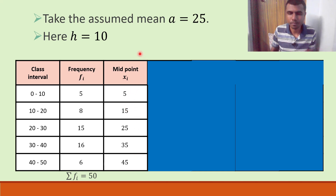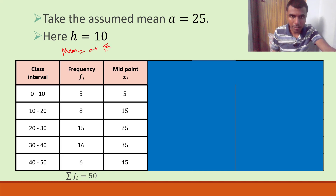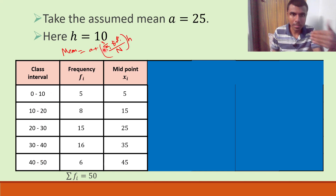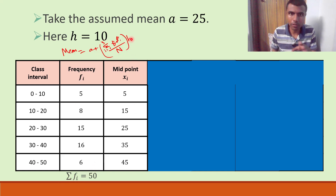Now next, let me show you the mean formula. The mean formula using the assumed mean method is: x̄ = a + (sigma fi * di / n) * h, where the sum runs from i = 1 to 5 since there are 5 rows. Here a is the assumed mean, di is to be defined, n = sigma fi = 50, and h = 10. We need sigma fi * di.